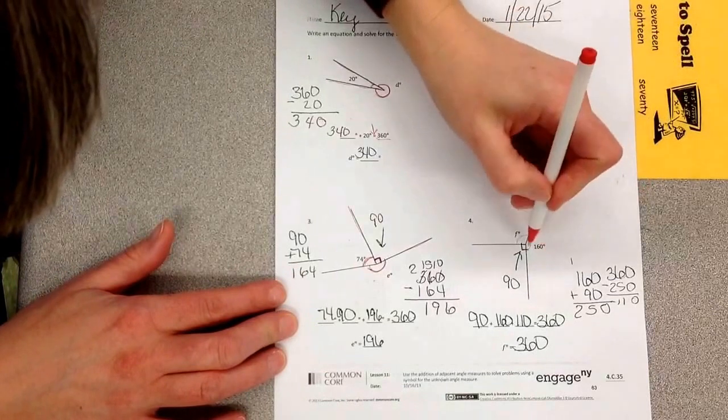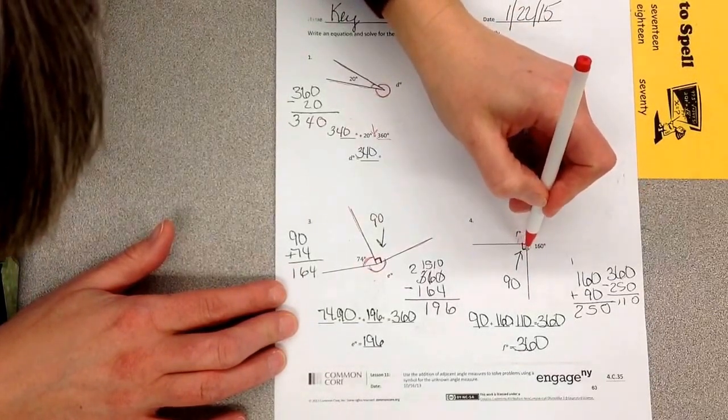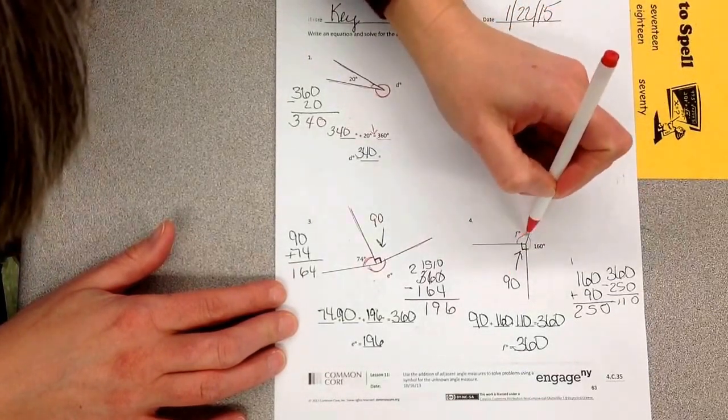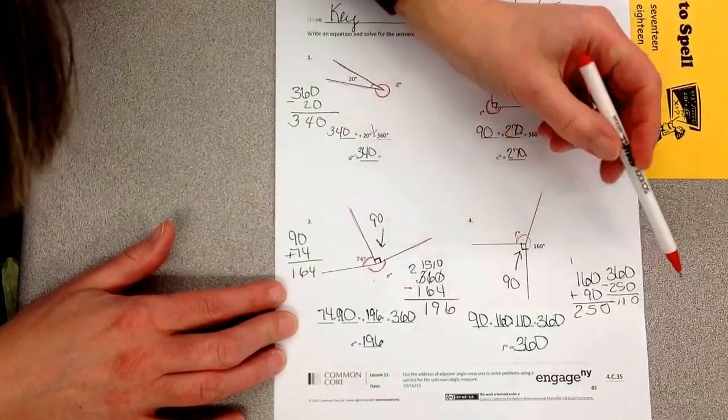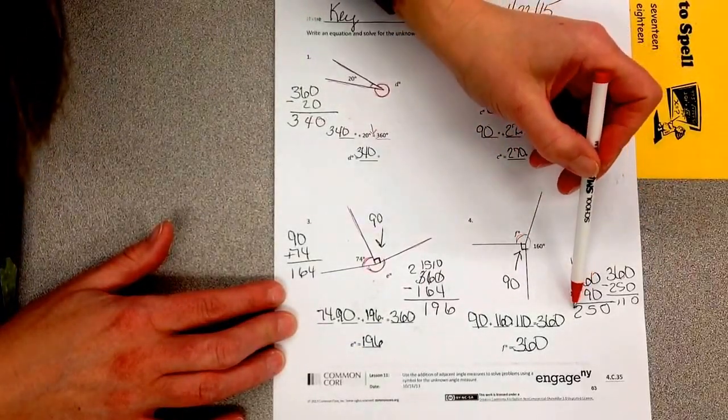Okay, let's look at this one. We have the right angle symbol. We know this is 90. This is 160. This is what we have to find. Well, 160 plus 90 is 250.